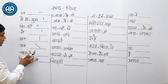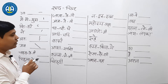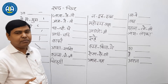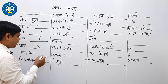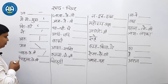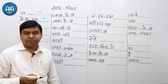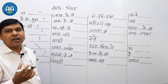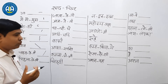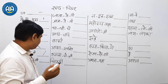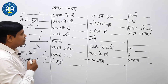चाहता, चाहते, चाहती — जब भी आएगा तो एक ही symbol बनेगा 'चा', जो line से ऐसे touch हो। पिछला, पिछले, पिछली — इसमें आपको क्या करना है: जो simple चाह है, इसके साथ card देना है।